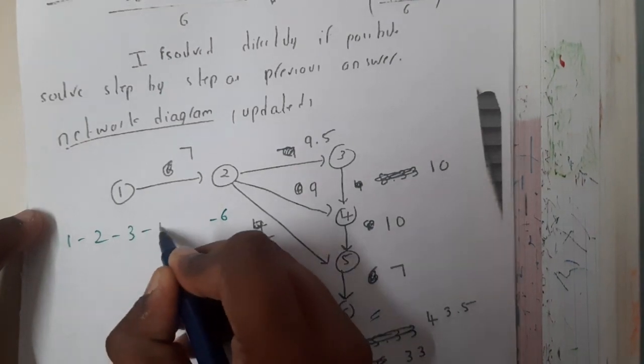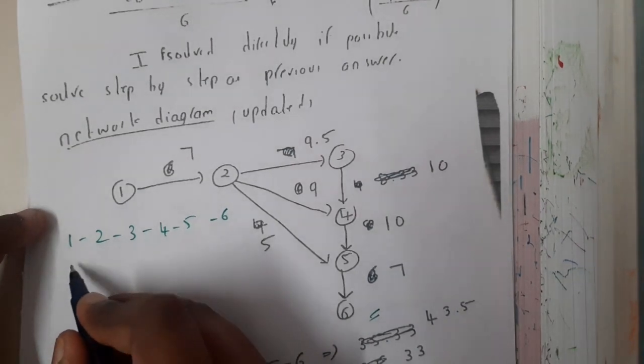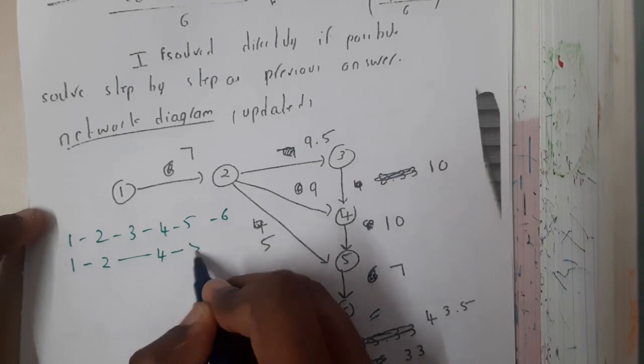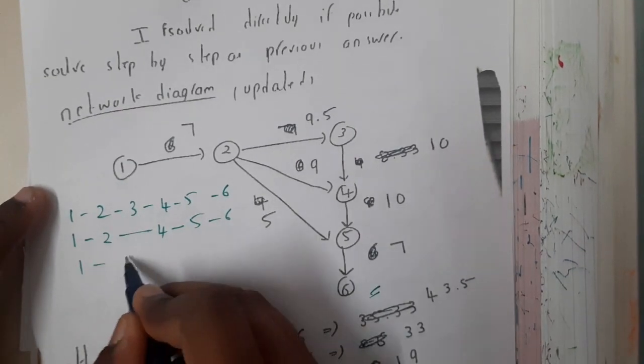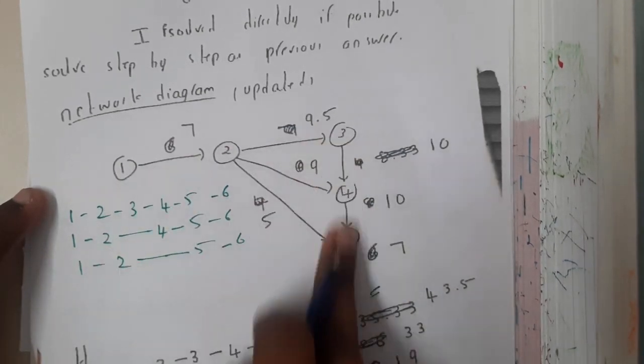What are the different paths? From 1 I can go to 2, from 2 to 3, from 3 to 4, from 4 to 5, and from 5 to 6. Similarly, from 1 to 2, from 2 to 4, 4 to 5, and 6. Similarly, from 1 to 2, and I can do a long jump to 5 to 6. I am just writing all the possible paths.